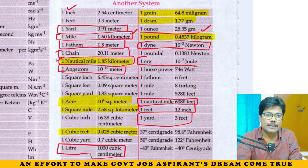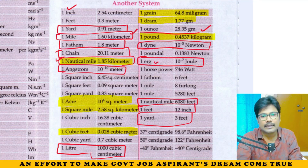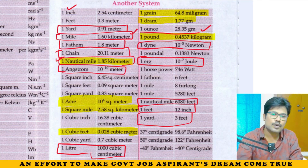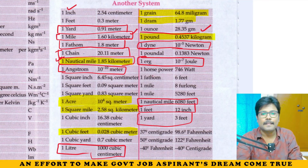1 erg is equal to 10 to the power of minus 7 joule.